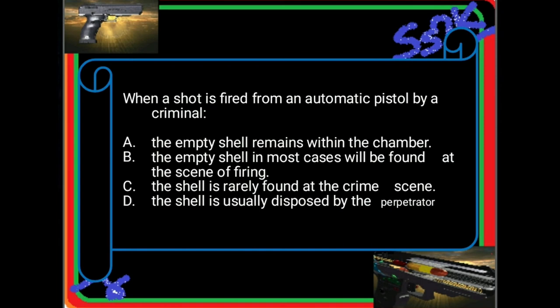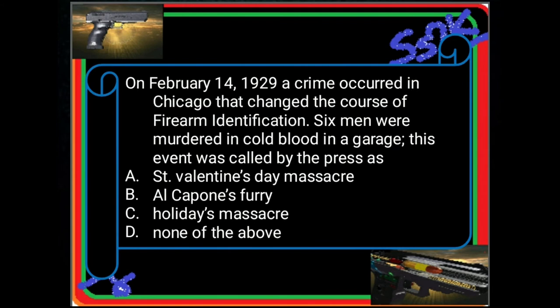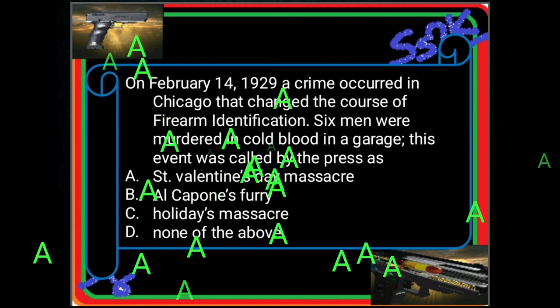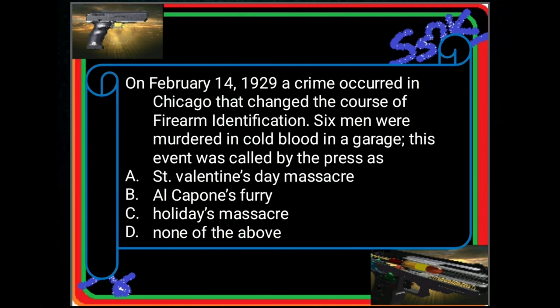Next question: On February 14, 1929, a crime occurred in Chicago that changed the course of firearms identification. Six men were murdered in cold blood in a garage. This event was called by the press: A: Saint Valentine's Day Massacre; B: Alcapone's Fury; C: Halliday's Massacre; D: None of the above. The answer is A — the Saint Valentine's Day Massacre, which was solved by Colonel Calvin Goddard.